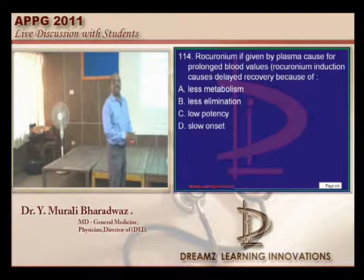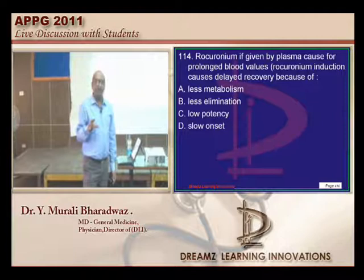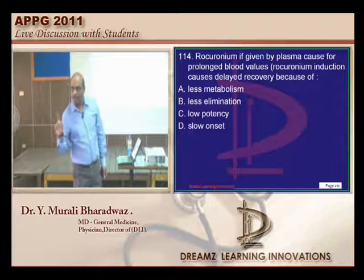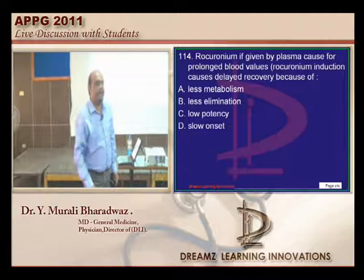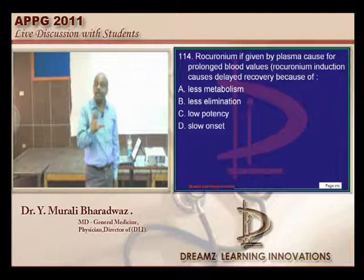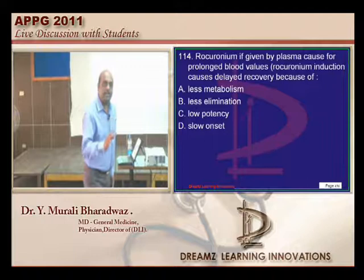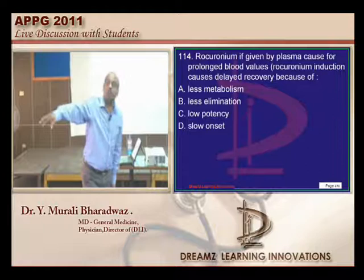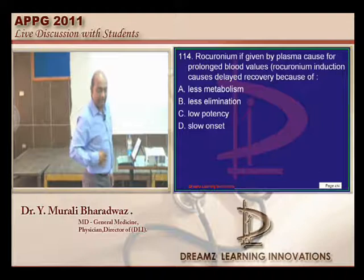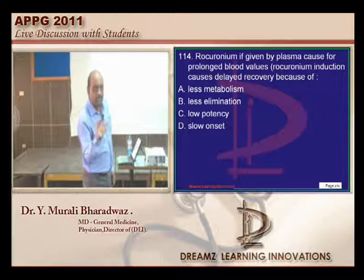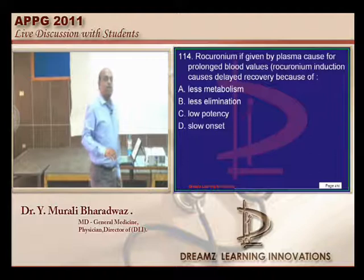Regarding rocuronium: why does recovery become slow, or why does it have a long duration of action? The point is it is not elimination which is responsible for the duration of action of rocuronium — it is redistribution. One peculiar point about rocuronium and vecuronium is that organ metabolism is not the limiting factor for duration; redistribution decides it — how much plasma volume is available and how much fat solubility it has.